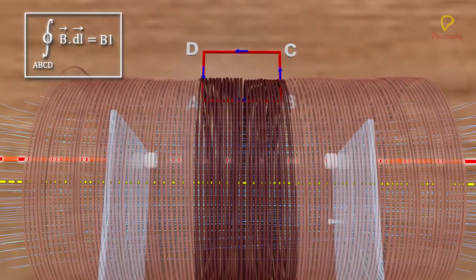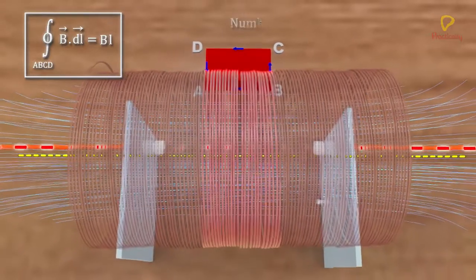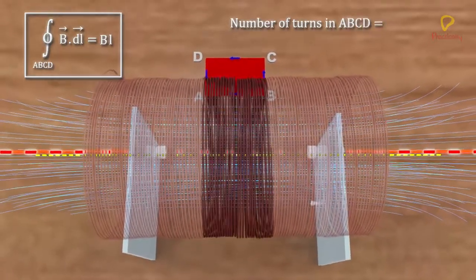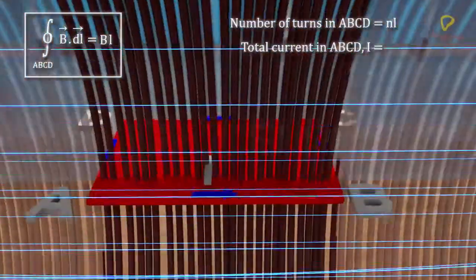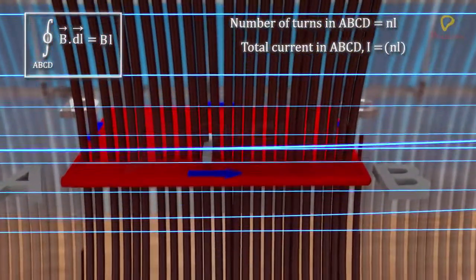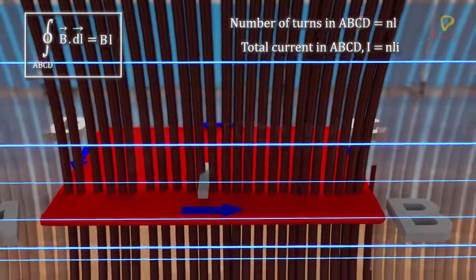As n is the number of turns per unit length along the axis of the solenoid, number of turns covered by the rectangle is nL. Total current passing through the area of the rectangle is number of turns multiplied by the current in each turn, that is, nLi.